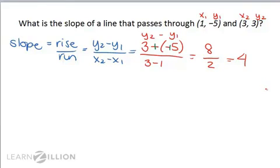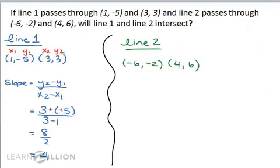We're going to use this idea when trying to see if two lines intersect. Let's see how this works in a problem. If line 1 passes through (1, -5) and (3, 3), and line 2 passes through (-6, -2) and (4, 6), will line 1 and line 2 intersect?